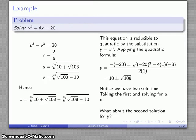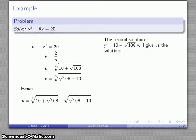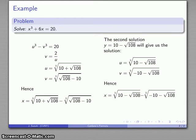How about that second solution, that 10 minus root 108? So if y equals 10 minus root 108, I can go through the same process. u is still the cube root of y, is going to be this, v cubed, still u cubed minus 20, 10 minus root 108 minus 20, and that gives me what v is equal to, and again, x is the difference of u minus v, and it seems that this is actually a different solution.